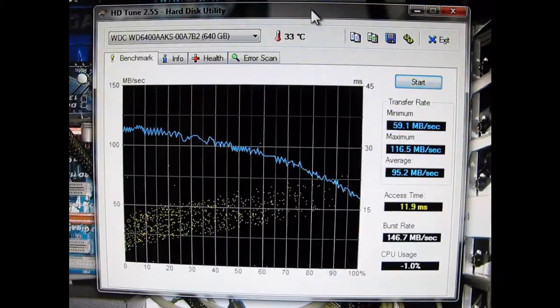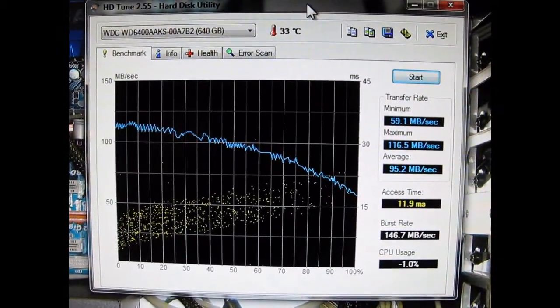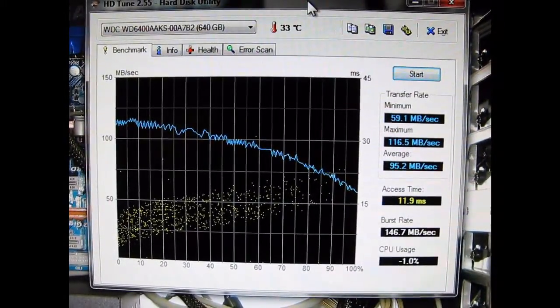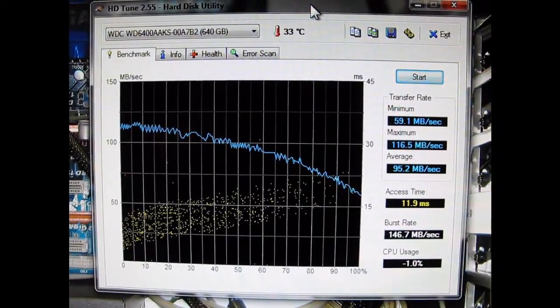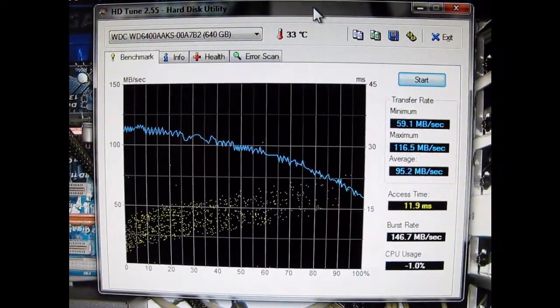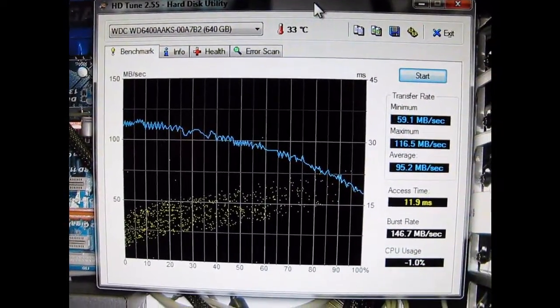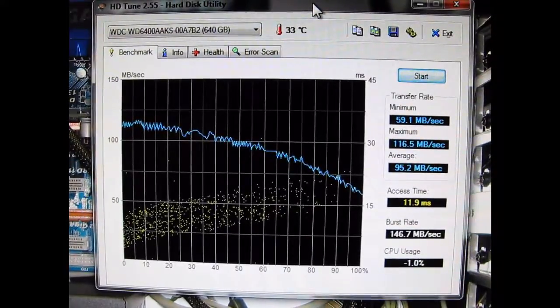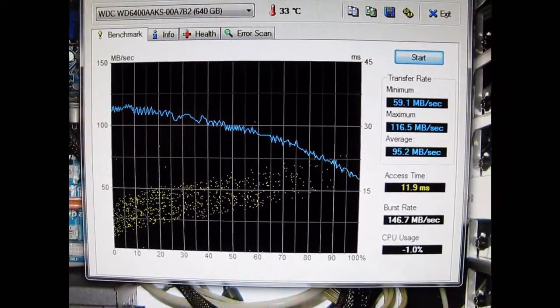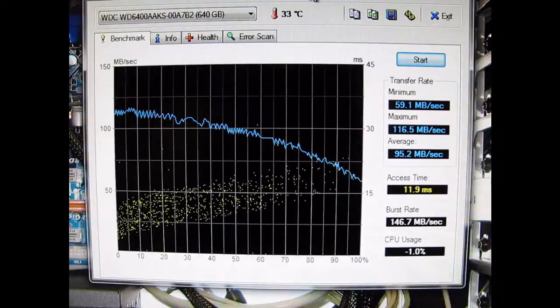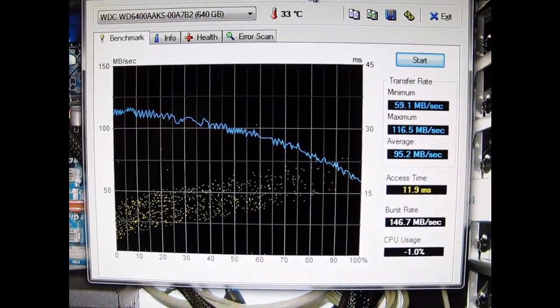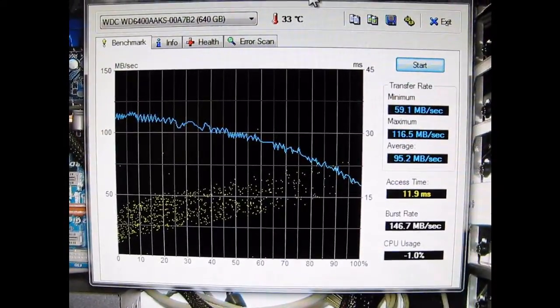I would imagine they'd be about the same. So you got a minimum of 59.1, maximum 116.5, with an average of 95.2, 11.9 ms access time, burst rate of 146.7.